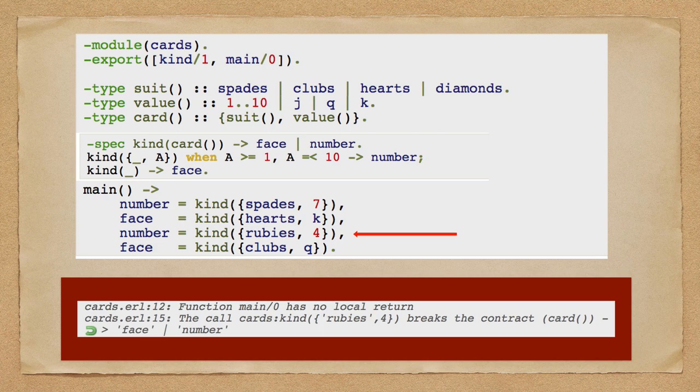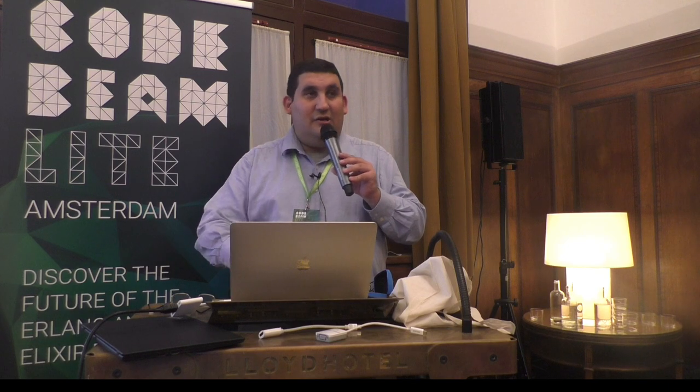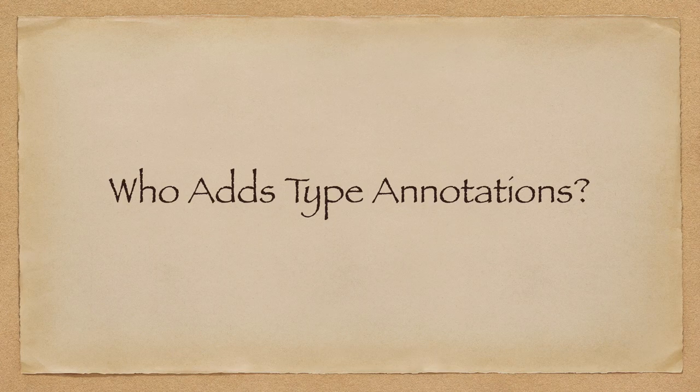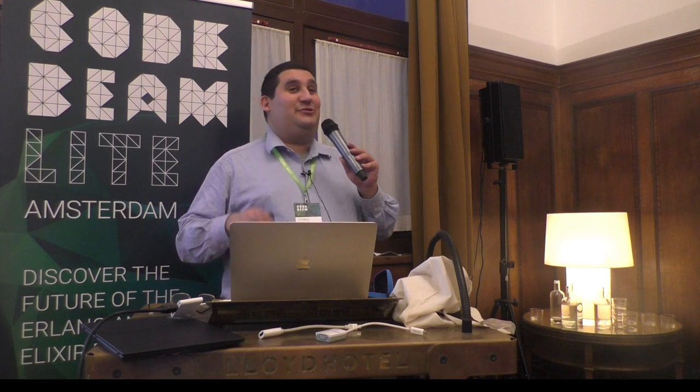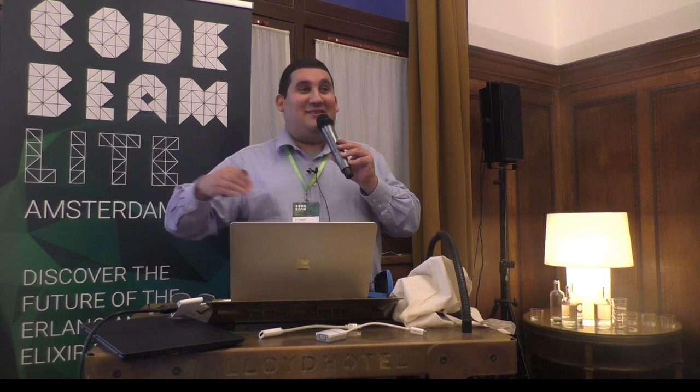It's basic dialyzer. So the first question is: who here adds type annotations to their code? Most people — cool. And who uses dialyzer? Still most people. I recommend, by the way, if you don't use dialyzer, start using it when you start your project, because if you write code for six months and then run dialyzer, you will be very sad.